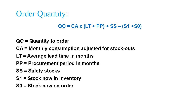Maximum stock is calculated as minimum stock plus review period stock level. The quantity to order can be calculated using this formula: monthly consumption adjusted for stock out. If there is stock out for 5 days in a month, calculate consumption for 25 days, then scale to 30 days to get the adjusted monthly consumption.